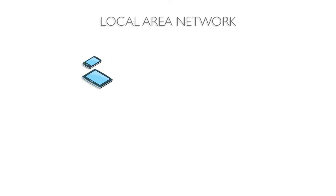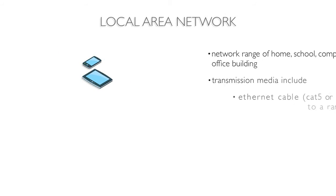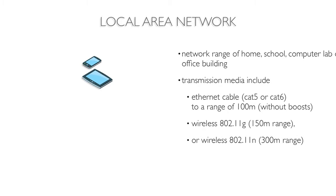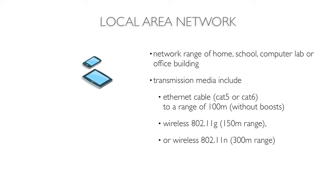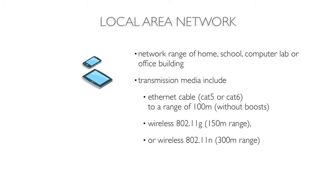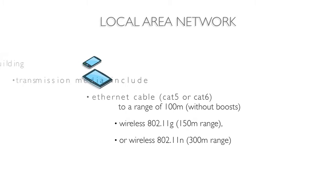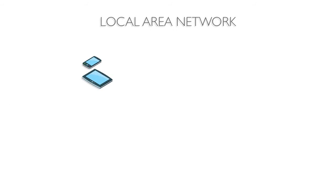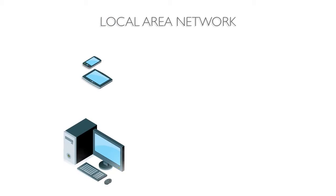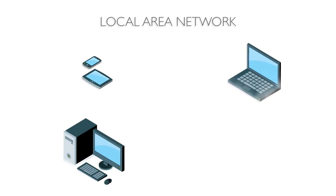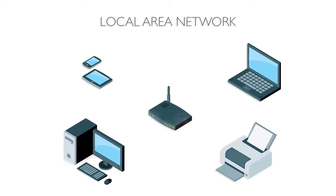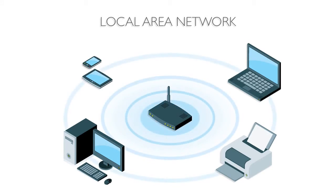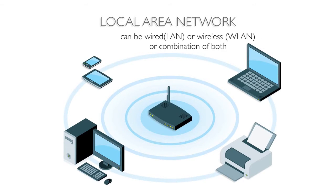A local area network extends the geographic range from 10 meters to 300 meters. LANs are often found in homes, schools, computer labs, or office buildings. Devices include desktop computers, laptops, printers, and a central switch or wireless router to allow for connectivity and data transfer. Typically LANs are arranged in a star topology around a central routing device, but networks can be wired or wireless.